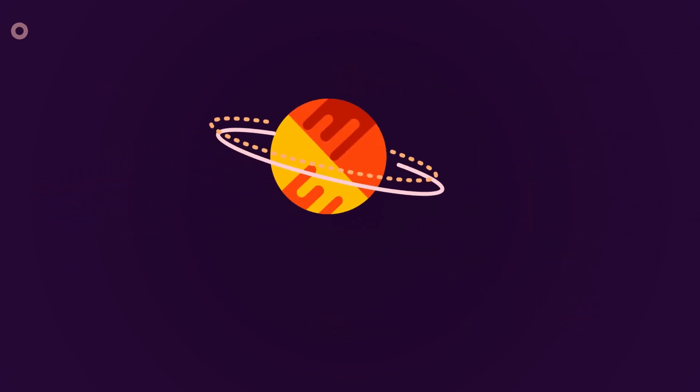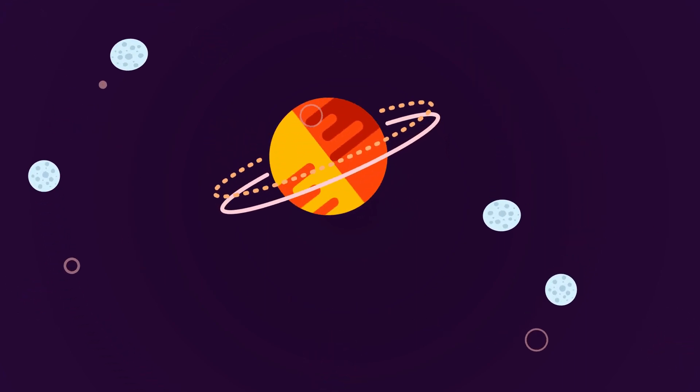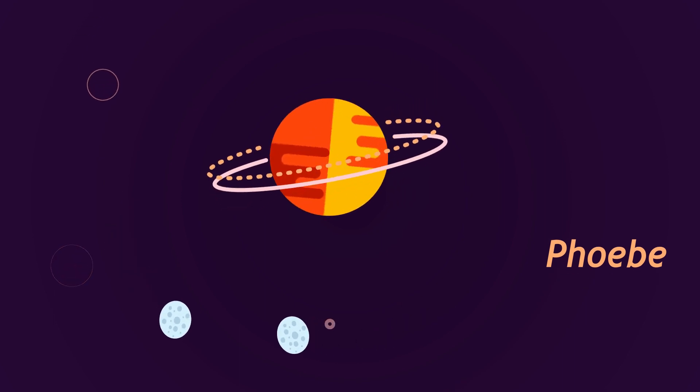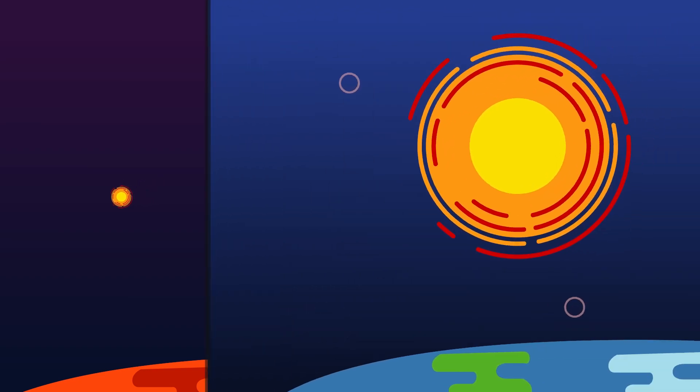Saturn cannot support life as we know it. But some of Saturn's moons have conditions that might support life. Saturn's moon Phoebe orbits in the opposite direction. The Sun looks 10 times smaller on Saturn than it looks on Earth.